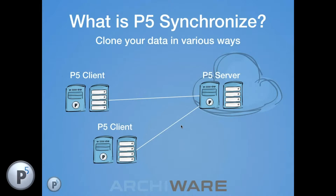The P5 server could also be installed in the cloud. A common example is Amazon Web Services, where you can run a Linux instance with attached storage. Once the software is running on a cloud server, it can replicate from multiple remote offices — copying all those locations' data back to a cloud machine you control, giving you an offsite backup of all your premises.